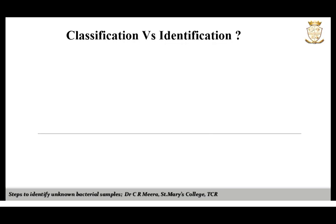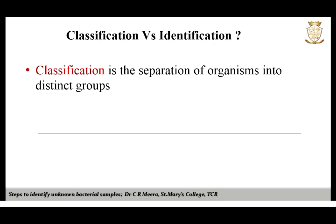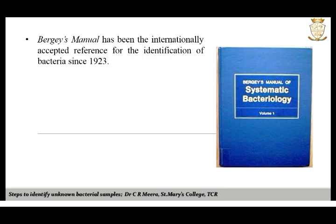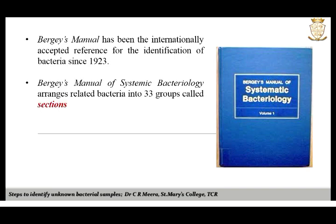The processes of classification and identification are entirely different. Classification is the separation of organisms into distinct groups, whereas identification is the determination of the correct place of an organism in a previously established plan of classification. Bergey's Manual has been the internationally accepted reference for the identification of bacteria since 1923.